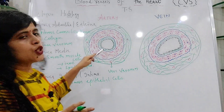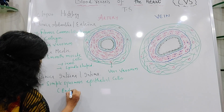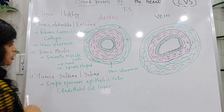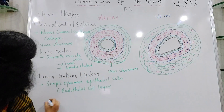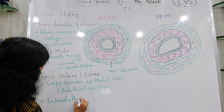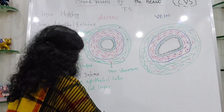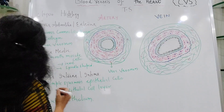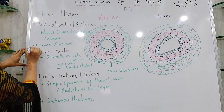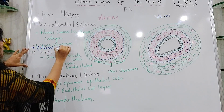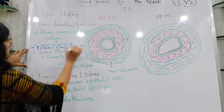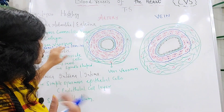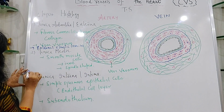The tunica intima, shown in black in the diagram, is composed of simple squamous epithelial cells called endothelium — so this layer is called the endothelial cell layer. Just outside it is the sub-endothelium, shown in green. Between the adventitia and media is the external elastic lamina, and between the media and intima is the internal elastic lamina — both made up of elastic tissue that can contract and recoil.